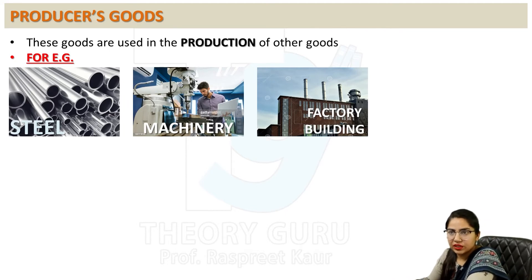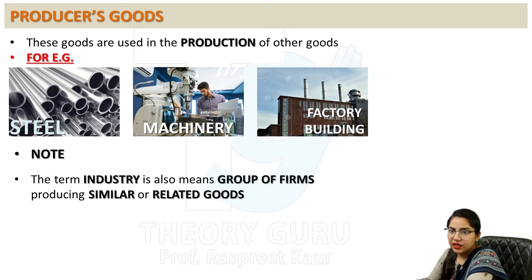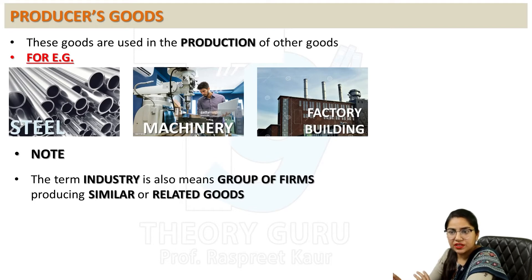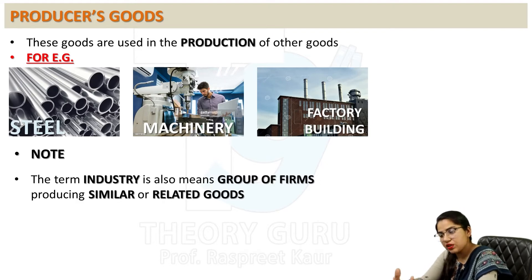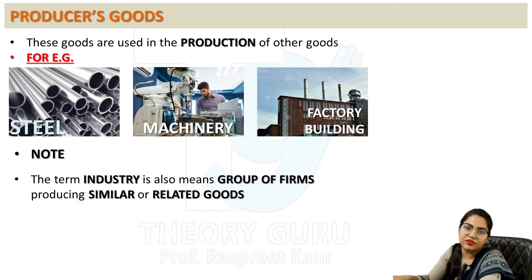So there are two types of goods: consumer goods, which can be directly consumed, and producer goods, which cannot be directly consumed. The term 'industry' also means a group of firms producing similar or related goods. When a group of firms are producing similar or related goods, we also collectively call them an industry.